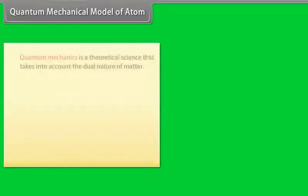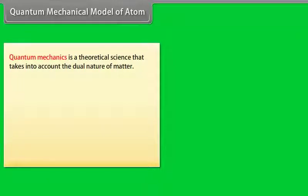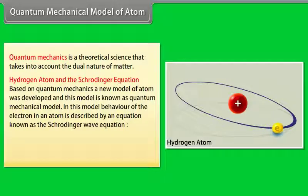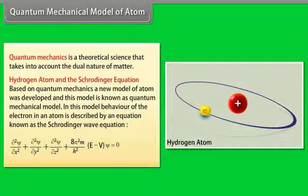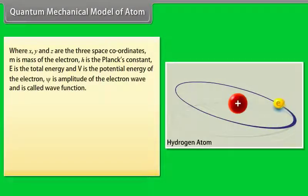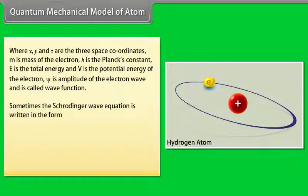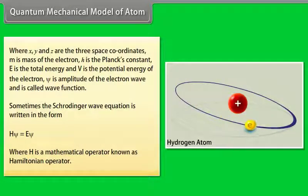Quantum mechanics is a theoretical science that takes into account the dual nature of matter. Based on quantum mechanics, a new model of atom was developed known as the Quantum Mechanical Model. In this model, the behavior of the electron in an atom is described by the Schrödinger Wave Equation, where X, Y, and Z are the three space coordinates, m is the mass of the electron, h is Planck's constant, E is the total energy, and V is the potential energy of the electron. Xi is the amplitude of the electron wave and is called the wave function. Sometimes the Schrödinger Wave Equation is written as H-Xi equals E-Xi, where H is a mathematical operator known as the Hamiltonian operator.